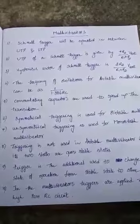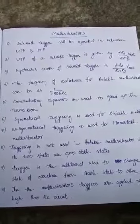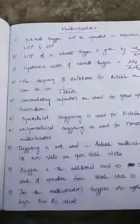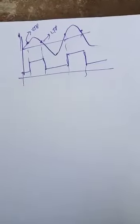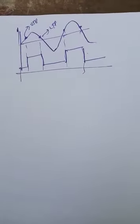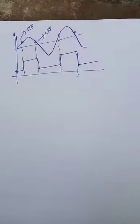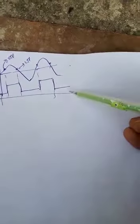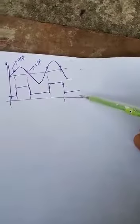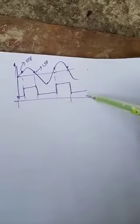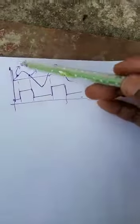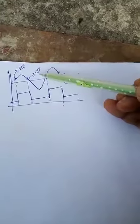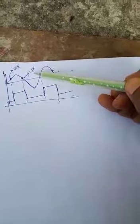The first question: a Schmitt trigger will be operated in between UTP and LTP. We know a Schmitt trigger can also be called a sine wave to square wave converter. When a sine wave is applied, it is going to convert the sine wave into a square wave. This circuit produces a square wave as output because it is always operating in between the two values of UTP and LTP. Based on the UTP and LTP only, the Schmitt trigger is always operating.